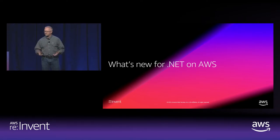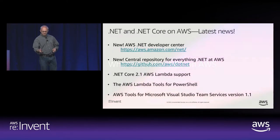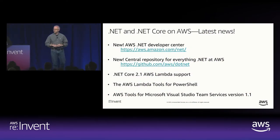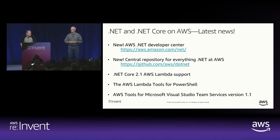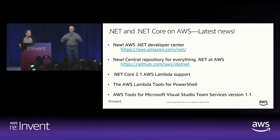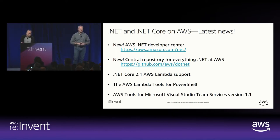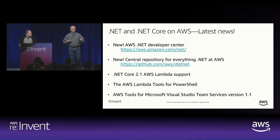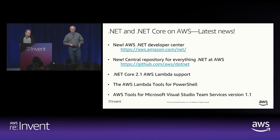First, we want to take a few moments to bring you up to speed with the latest news for .NET on AWS. There are two new links for you. We have a whole new .NET developer center on the main AWS site, aws.amazon.com/net. This is the main product collection page with jumping-off links to documentation, installers, everything you need to get started with .NET on AWS, plus samples and news.